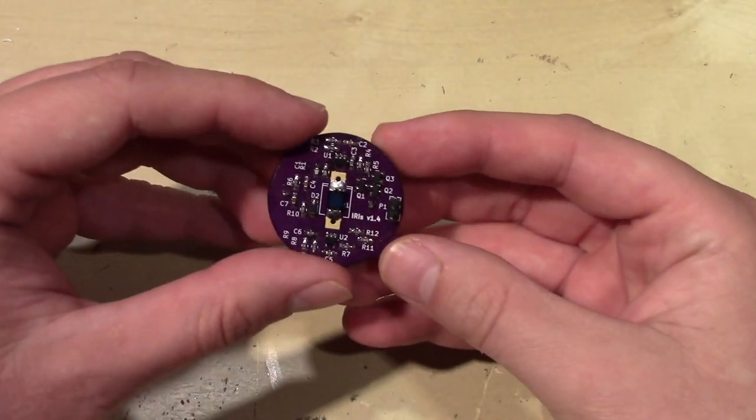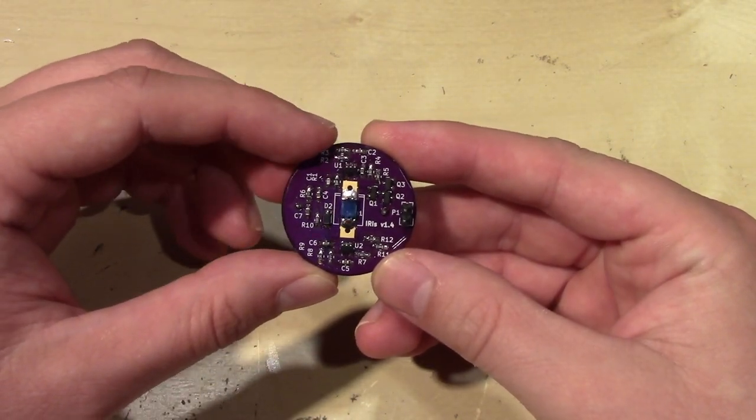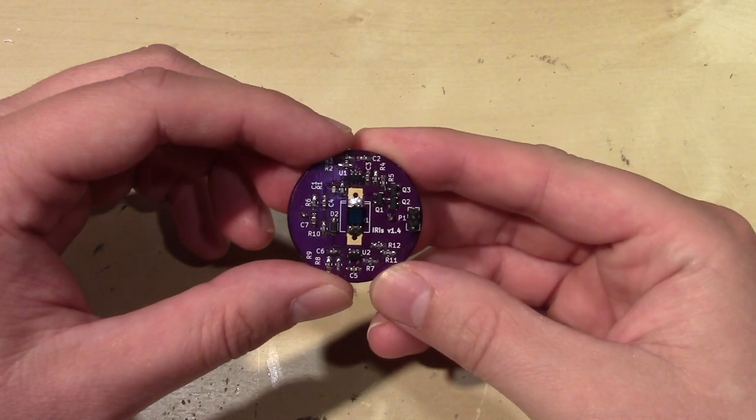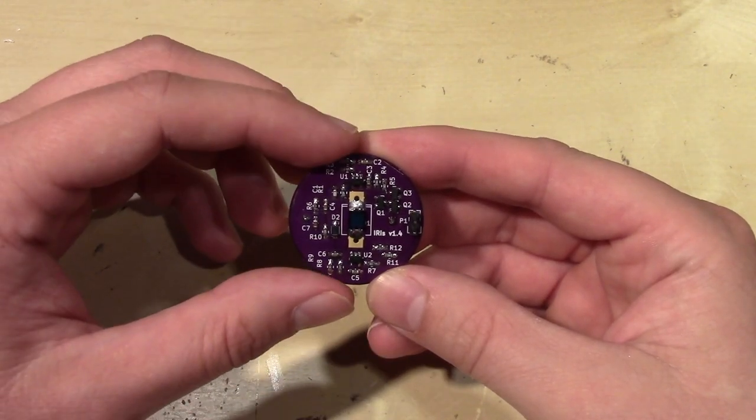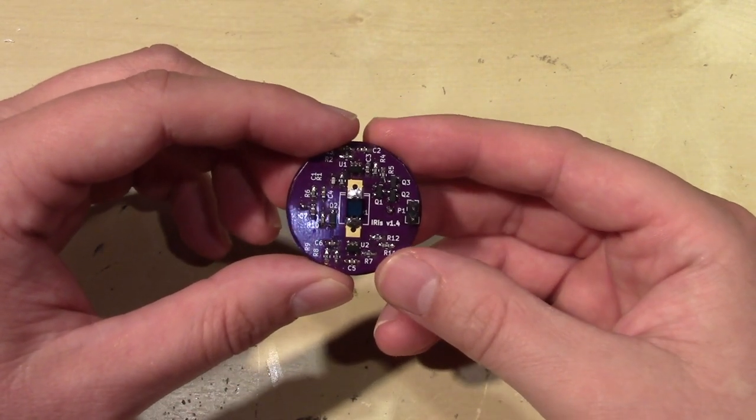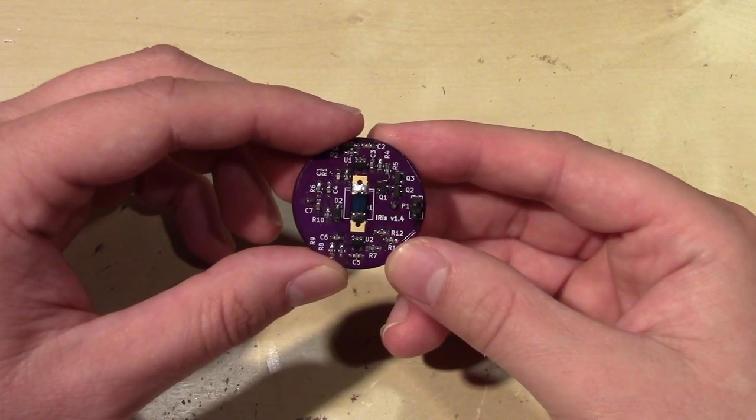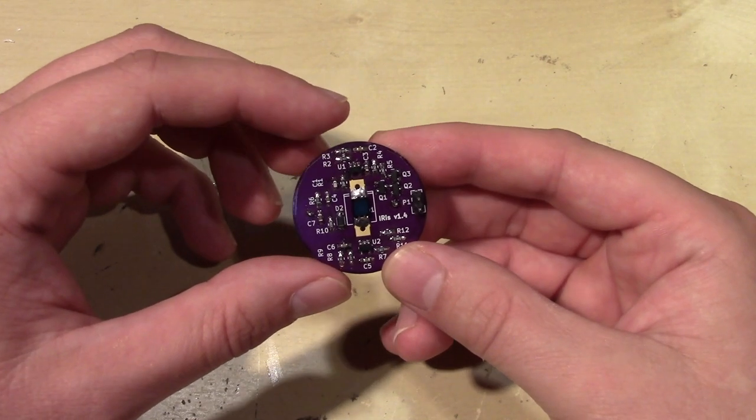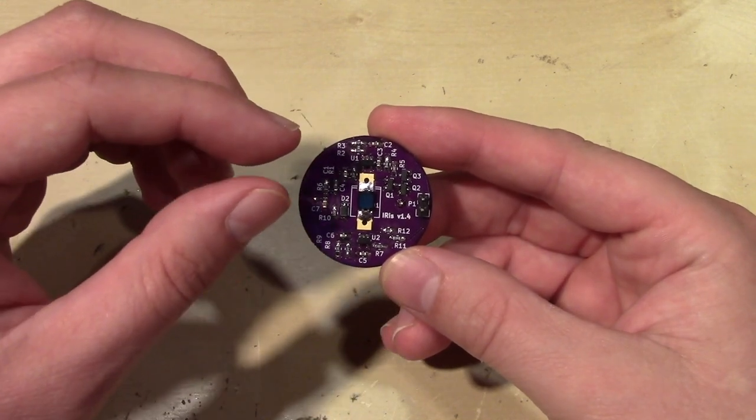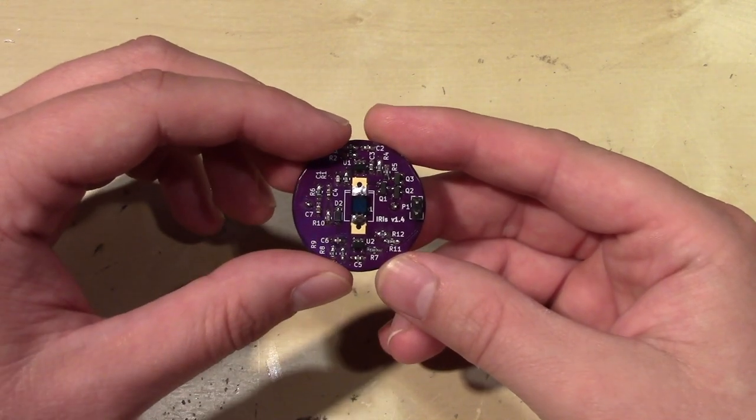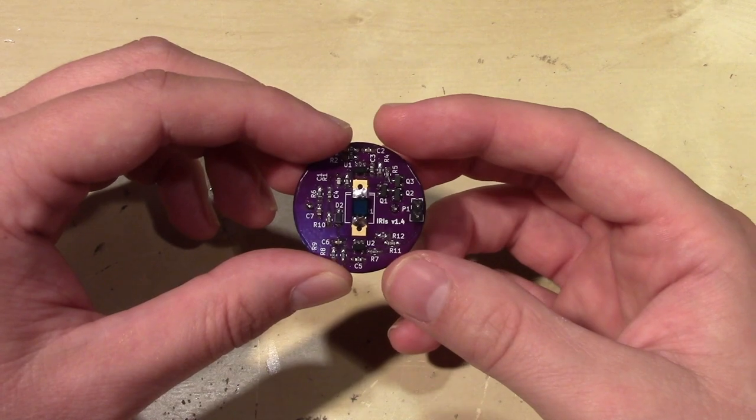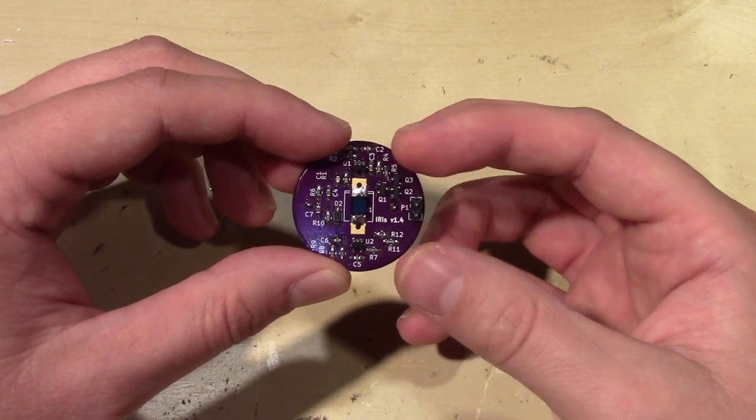So I put together this little circuit, which is really nothing more than a photodiode amplifier and a comparator, but it increased his range from one or two inches to 15, 20 feet or more, and made it a lot more practical for what he was trying to do. Now the circuit is not very complicated, but there are some very interesting caveats and design decisions you have to consider when you're building a photodiode amplifier.